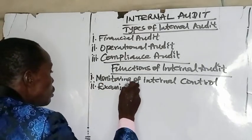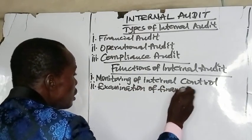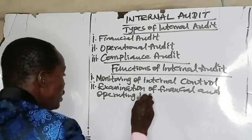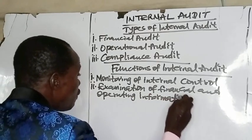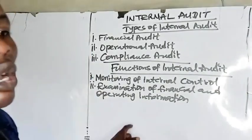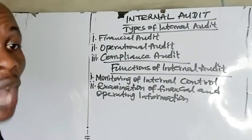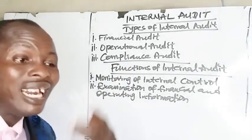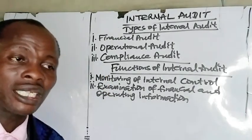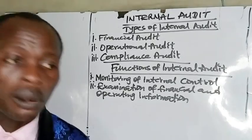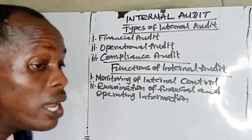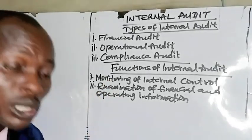Number two function is examination of financial and operating information. Internal audit departments may be required to examine the financial and operating information so as to know the reliability and usefulness of those information, and the extent to which management can rely on them.